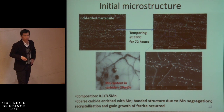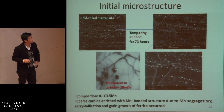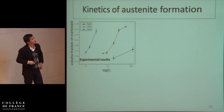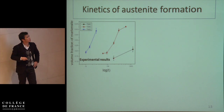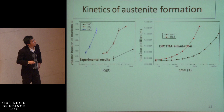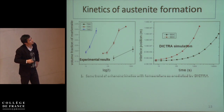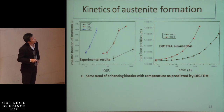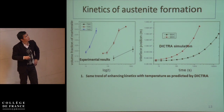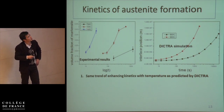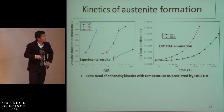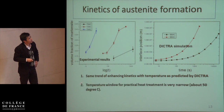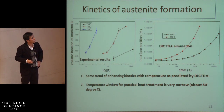Recrystallization and grain growth of ferrite have occurred after tempering. With this initial microstructure we can study the kinetics of austenite formation. This is the result in the dilatometer — a similar trend as the DICTRA prediction: austenite formation kinetics is very sensitive to temperature. At 700°C annealing the austenite formation can last for a long time, but if we increase the annealing temperature by just 40°C, austenite formation can be finished in several minutes. This means the temperature window for practical heat treatment in a conventional furnace is quite narrow — about 50°C.